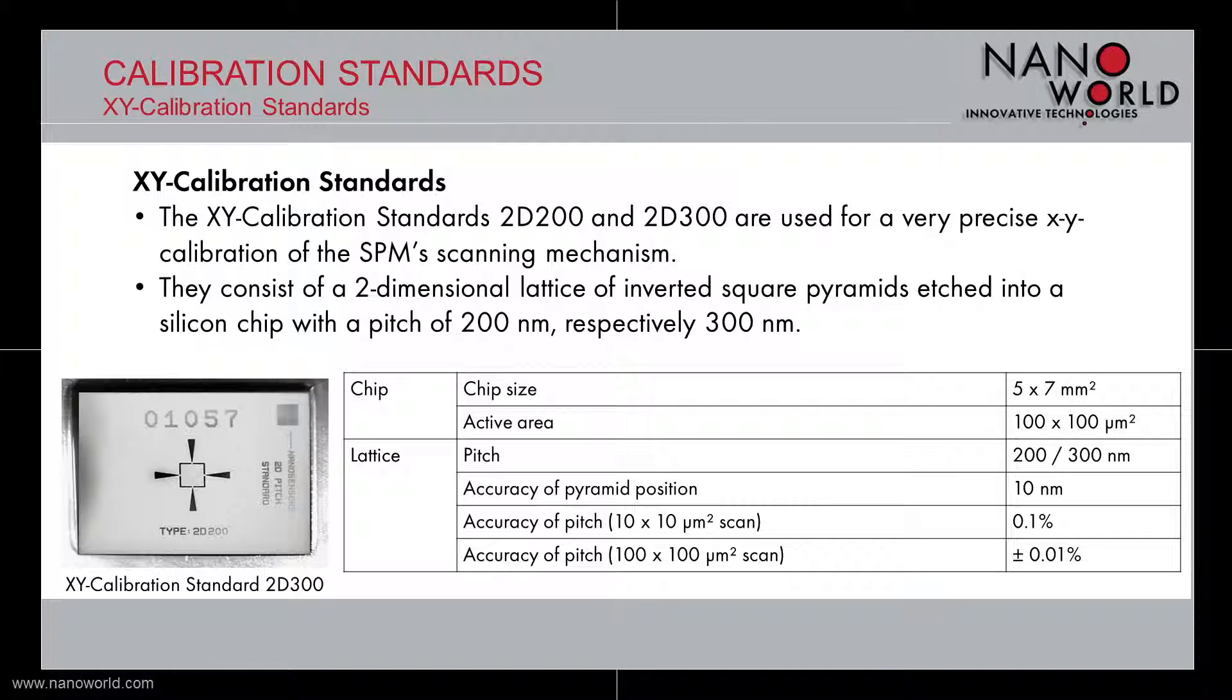They consist of a two-dimensional lattice of inverted square pyramids etched into a silicon chip with a pitch of 200, respectively 300 nm. The accuracy of the pitch is 0.1% on a 10x10 μm² scan area and drops down to 0.01% when the full active area of 100x100 μm² is scanned.